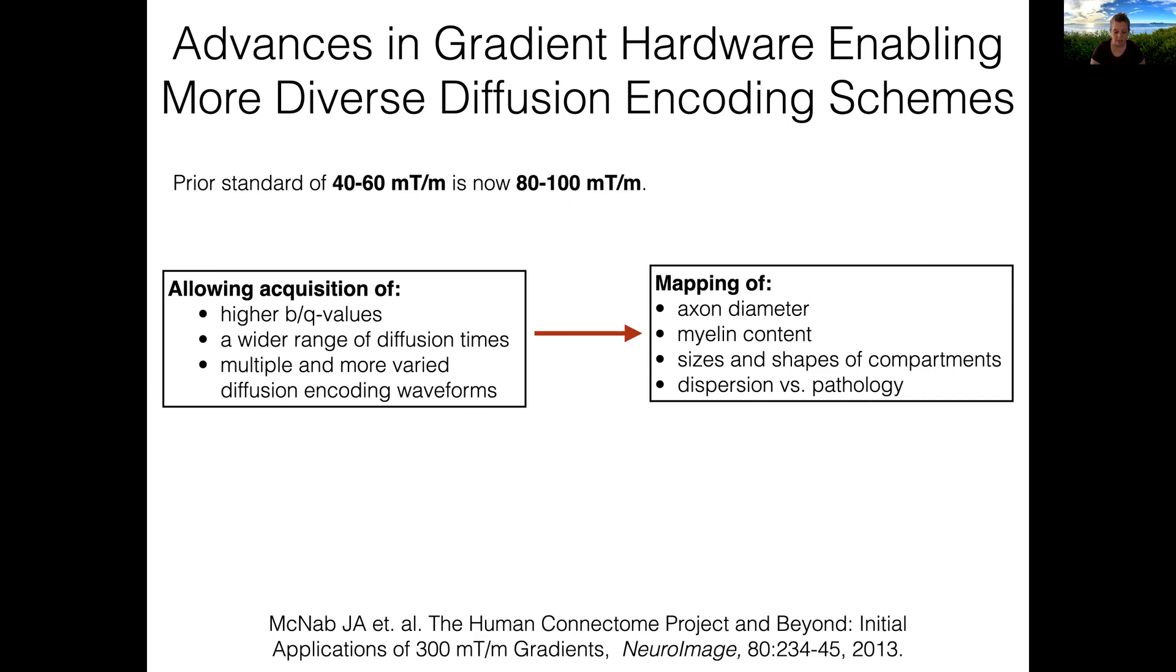The hope is that this more varied acquisition provides additional information about the tissue microstructure that enables us to more specifically probe key features such as axon diameter, myelin content, the sizes and shapes of compartments, and the ability to differentiate between things like dispersion and pathology.